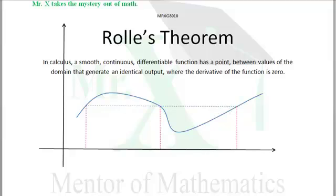If this function is smooth and continuous and differentiable, then between two points with the same output, there has to be at least one other point where the derivative of the function is zero.